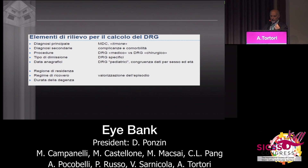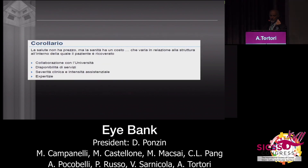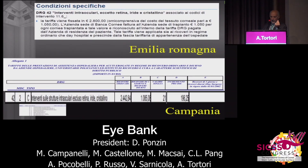The accounting system used by the DRG is based on primary diagnosis, secondary diagnosis, the type of procedures, the type of dismissal, the age of the patient, the kind of location or care provided, availability of services, clinical severity, and the expertise involved.